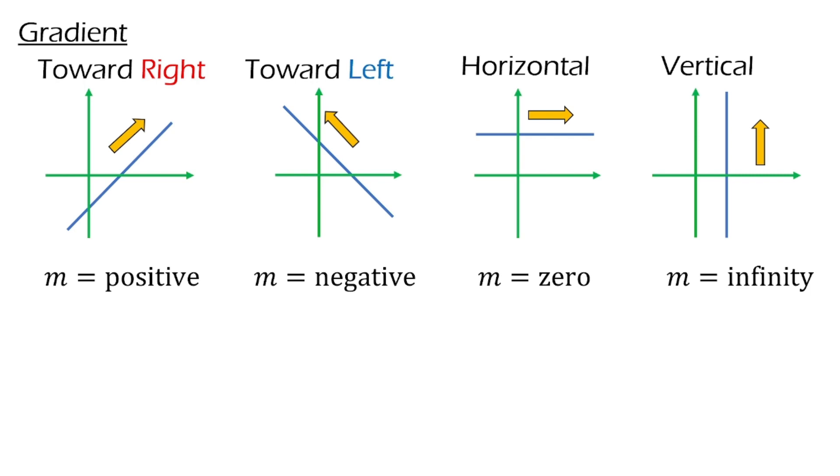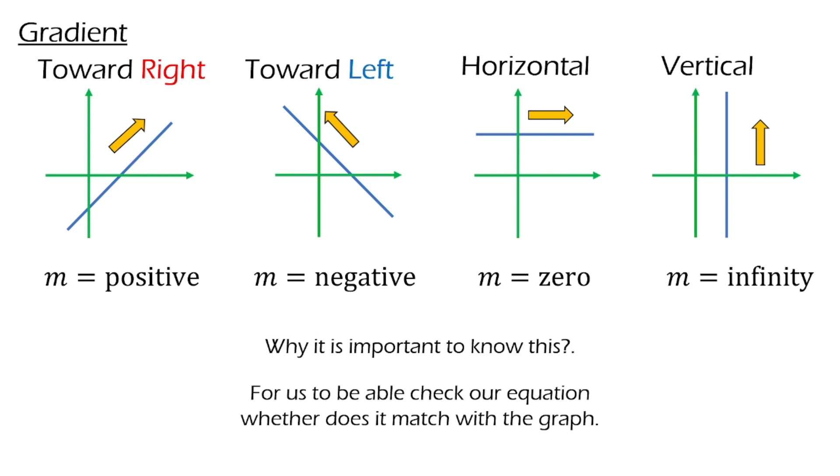Here is how the line look like when the gradient is 0 and infinity. Line with gradient equal to 0 will appear to be horizontal line, and line with gradient equal to infinity, we have vertical line. Why is this important to know? Very simple, because it allows us to be able to check whether our equation match the graph or not.